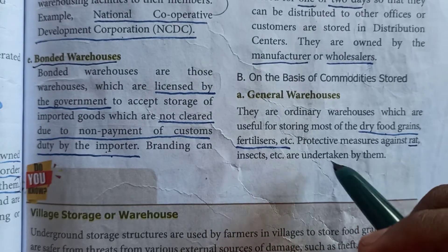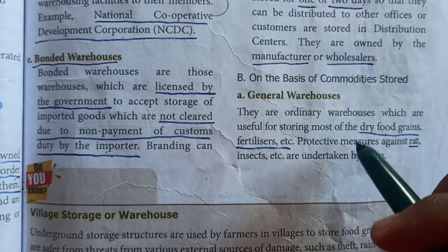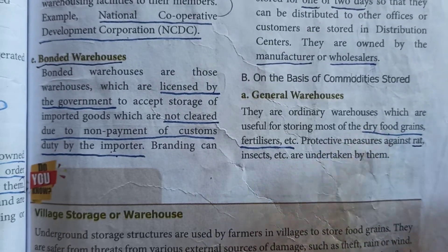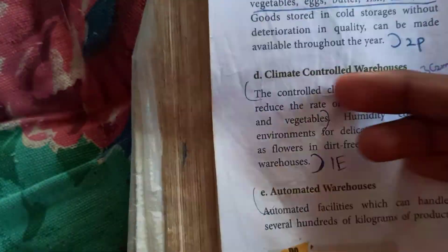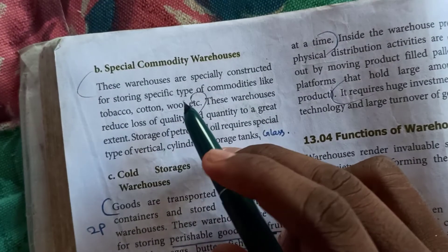In this warehouse, you have protective measures. Here you have risks from rats and insects — this is the damage or cause. This is a general warehouse.